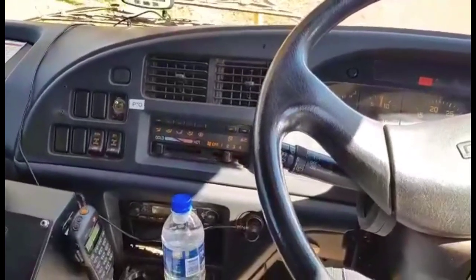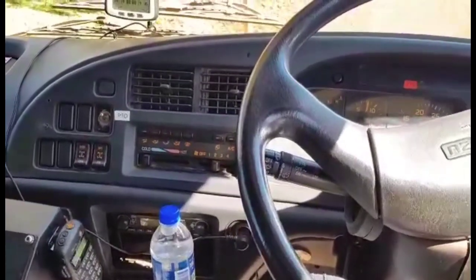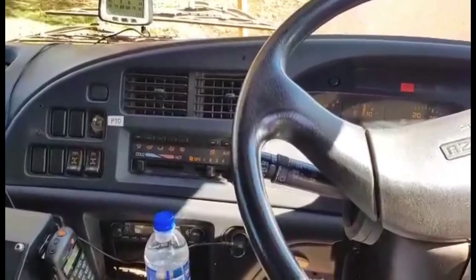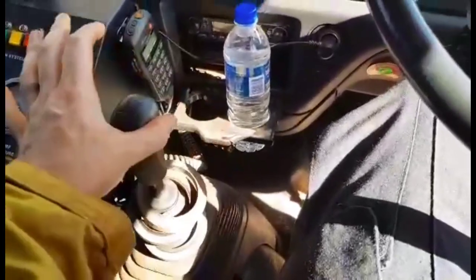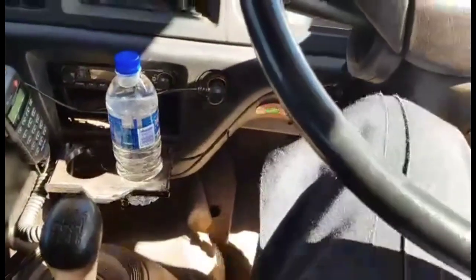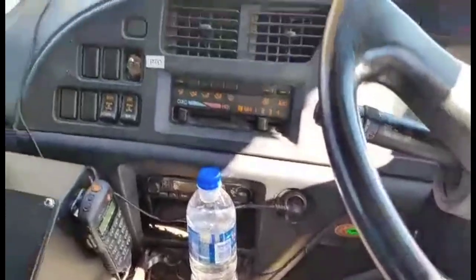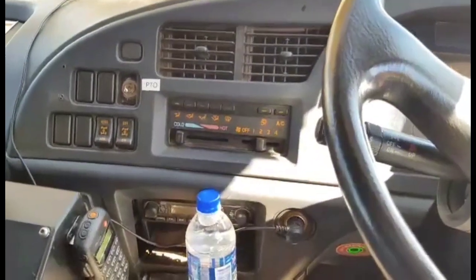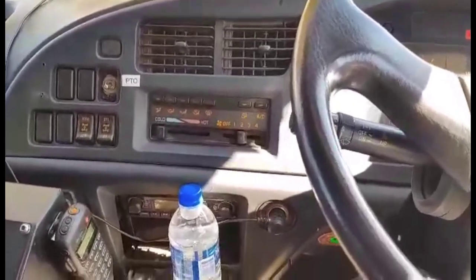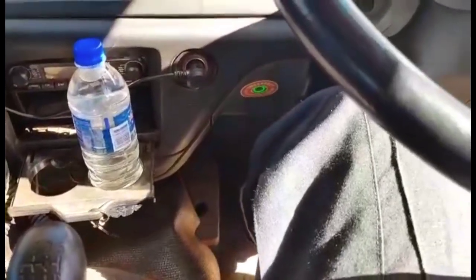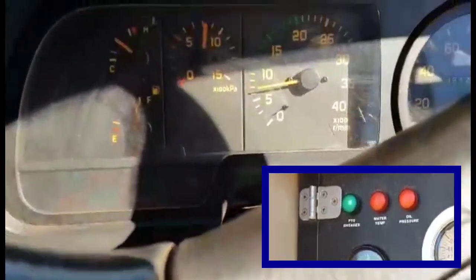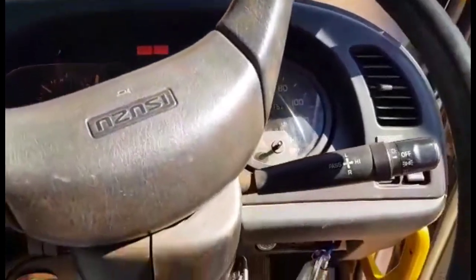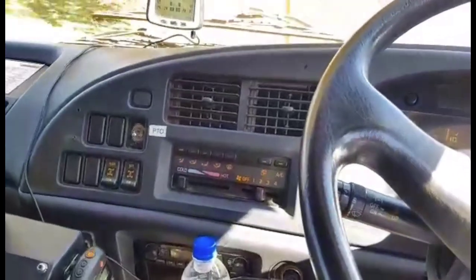So once we have arrived on scene and parked in an appropriate and safe location, the first thing we need to be doing is engaging the PTO so we can put power to our pump. To do this we have the gearbox in neutral. We place our foot on the clutch. Flip the PTO switch. Now it might be different on your appliance, the exact location of that. You would have heard just then the PTO engaged the pump. From here we want to be lifting off the clutch. At the same time we want to be looking at our tachometer to see if there's any changes. Now our PTO is engaged. We can go out to the pump.